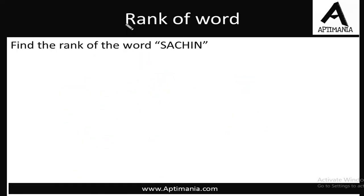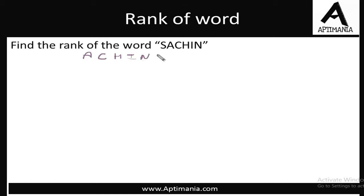Next example: the word is Sachin. First, we write the letters in ascending alphabetical order as per the dictionary: A, C, H, I, N, and then S. This is the alphabetical order. All words must be of 6 letters.